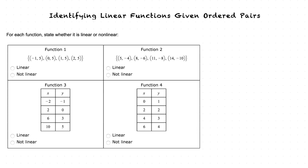Let's take a look at function 1. We can see that the x values of the function are constantly increasing by 1, and the y values remain constant with no change. Since they're both constant changes, the function is linear.